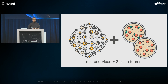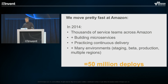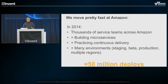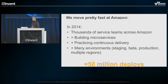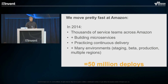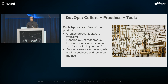Given this structure, we have the ability to move really, really fast at Amazon. This number from 2014 shows we had thousands of these two-pizza teams building microservices and practicing continuous delivery — many doing continuous deployment, though some don't have full automation across many environments like staging, beta, production, and multiple regions. In 2014 we did 50 million deploys through our primary deploy tool — that's about a deploy per second.